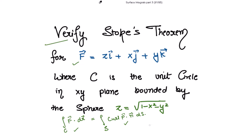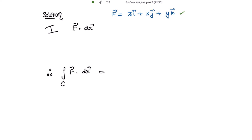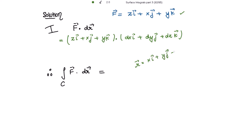Let's start with the solutions. First, I am going to evaluate the left hand side integral. So the given function's dot product with dr vector is: zi vector plus xj vector plus yk vector, dot product with dr vector, that is dxi vector plus dyj vector plus dzk vector. Taking r vector to be equal to xi plus yj plus zk, we get dr vector to be equal to that. Taking the dot product: i·i is 1, so writing z dx; j·j is 1, so writing x dy; k·k is 1, so writing y dz.